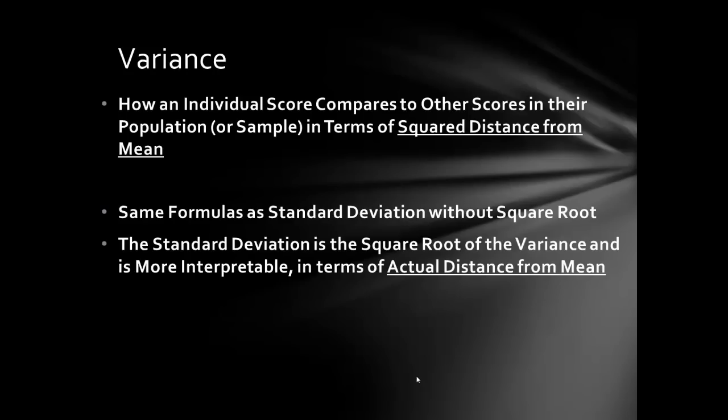The variance is closely related to the standard deviation. The variance tells you how an individual score compares to other scores relative to the mean in terms of the squared distance from the mean. The standard deviation, by contrast, tells you the spread in terms of the actual distance from the mean. The variance is in squared distance units.